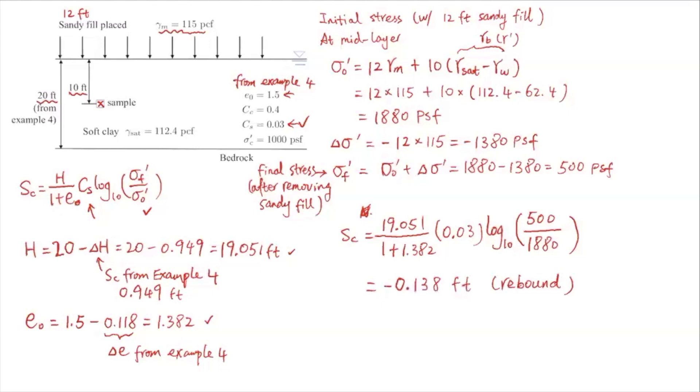And again, you can check if you use H equals 20 and e₀ equals 1.5, you see these two values are used, you will get fairly close Sc value as well. So Sc will approximately be 0.138 feet as well. So these two are basically very close. So that is part two of the same problem presented in example 4. So in this part, we're removing that sandy fill after the primary consolidation was fully achieved.